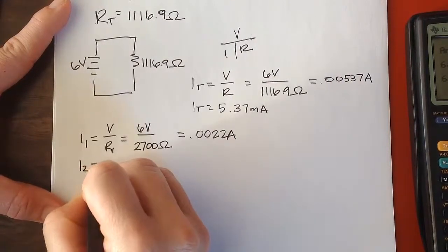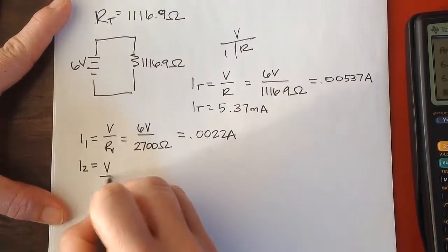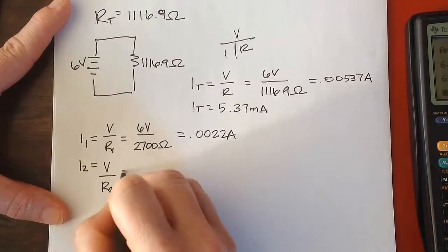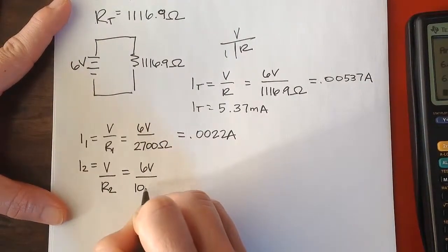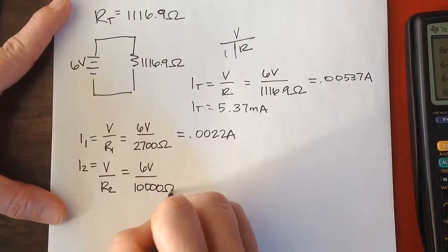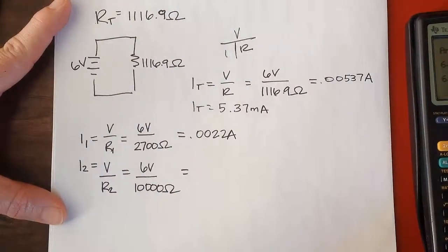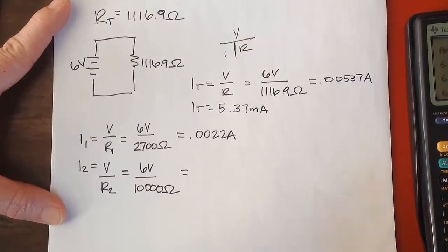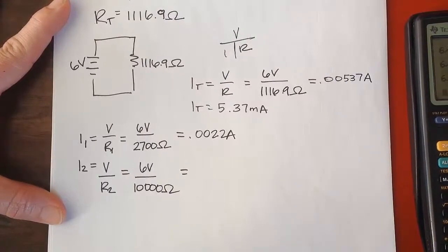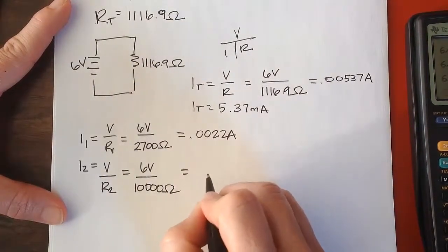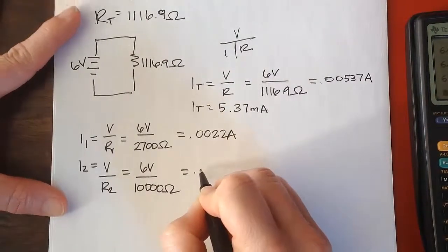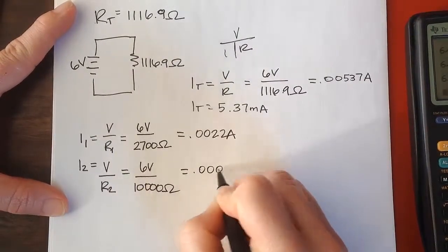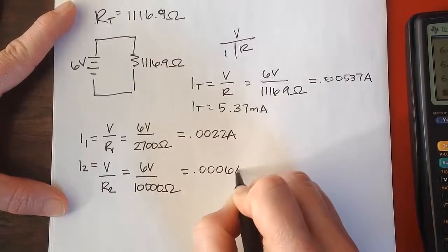And I2 will be V divided by R2. Our R2 was our 10,000 ohm resistor. I'll plug that into my calculator. I get 6 times 10 to the minus 4, so I get 0.0006 amps.